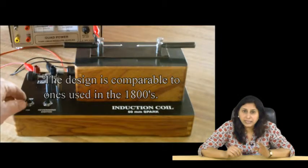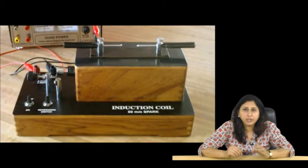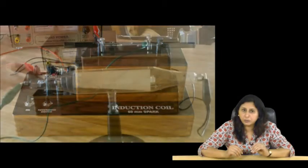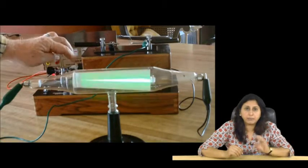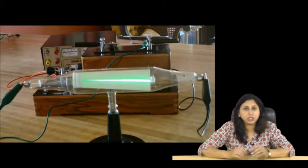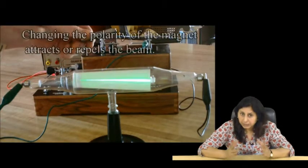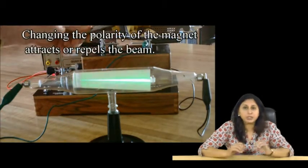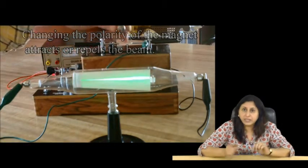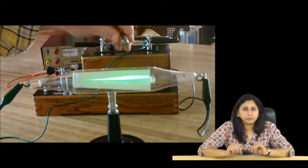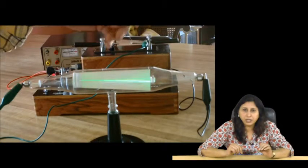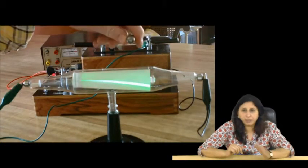At sufficiently low pressure of about 0.001 mm of mercury column, a discharge took place between the two electrodes on applying the electric field to the gas in the discharge tube. A fluorescent glow appeared on the glass opposite to cathode. The colour of glow of the glass depended on the type of glass. The cause of this fluorescence was attributed to the radiation which appeared to be coming from the cathode.